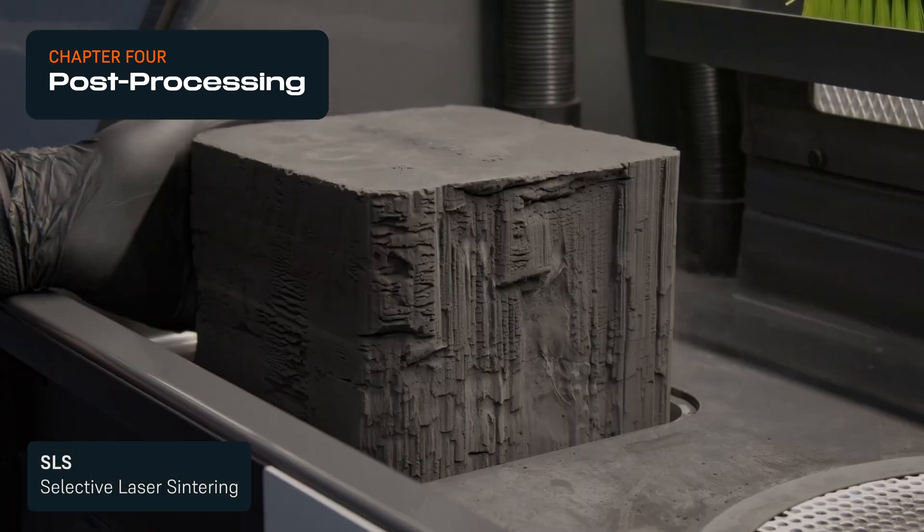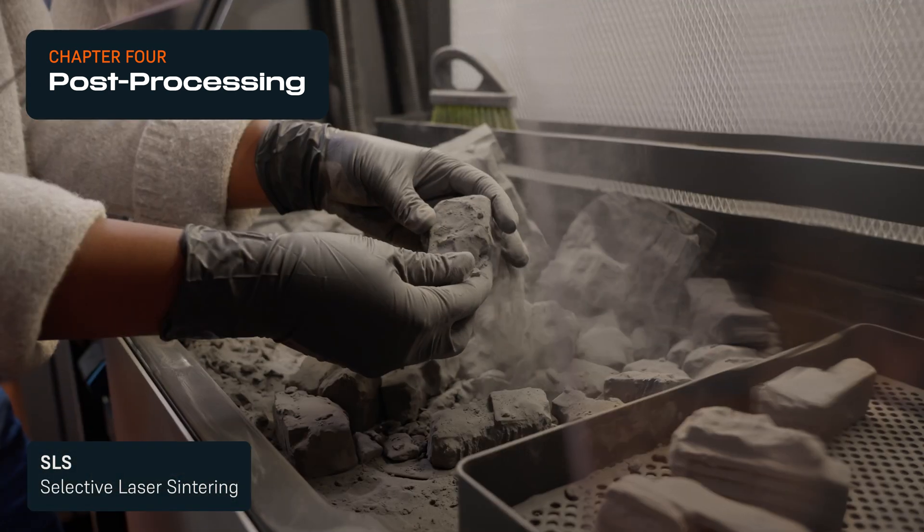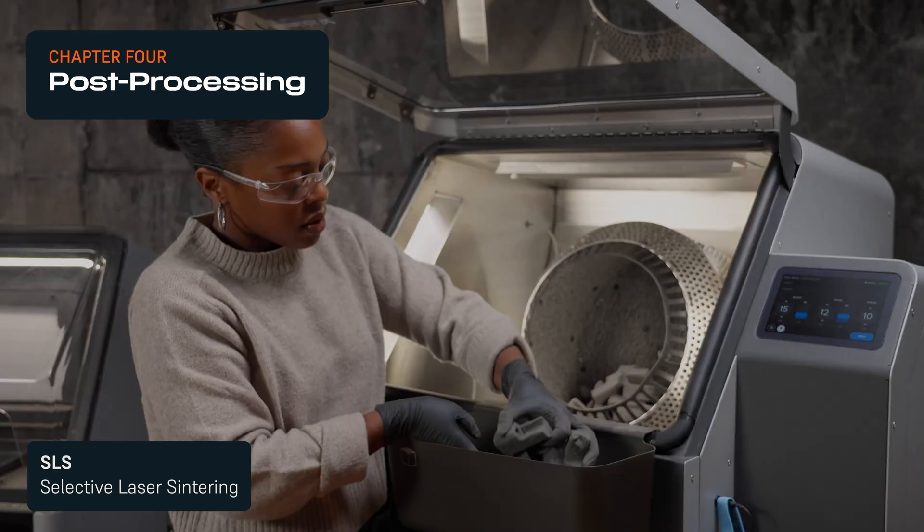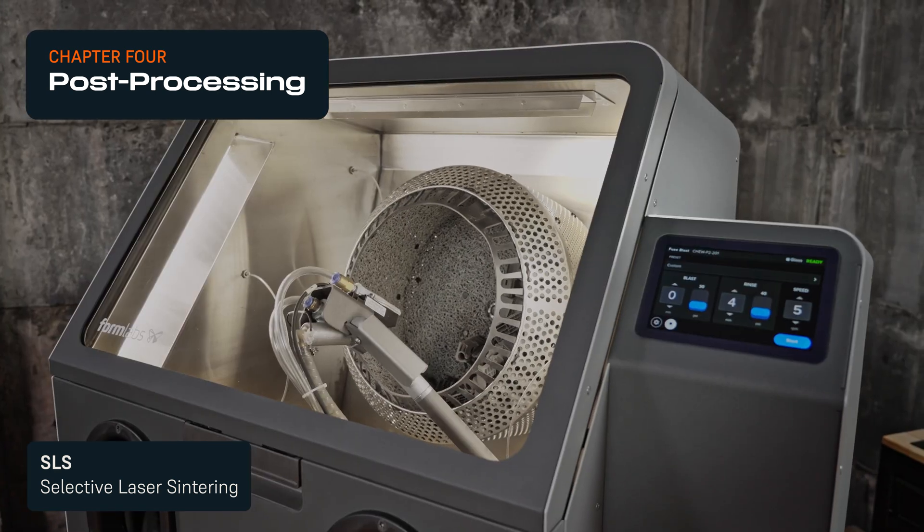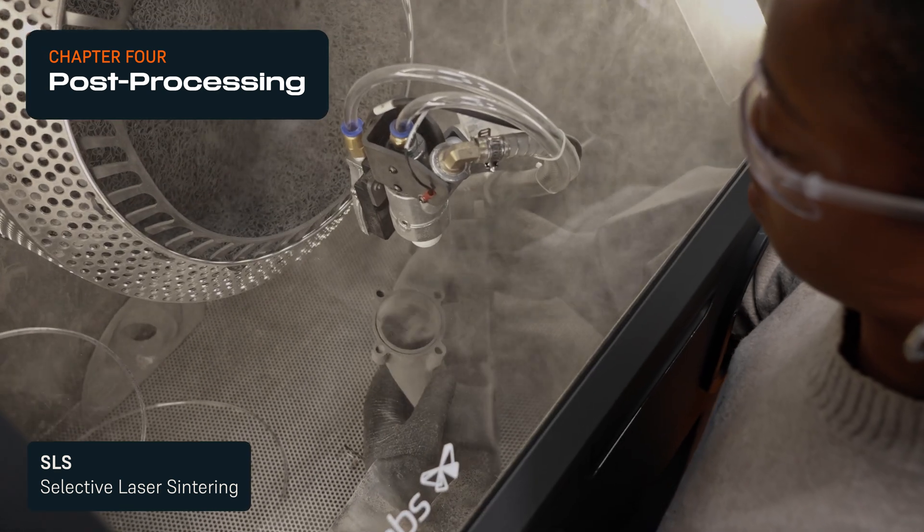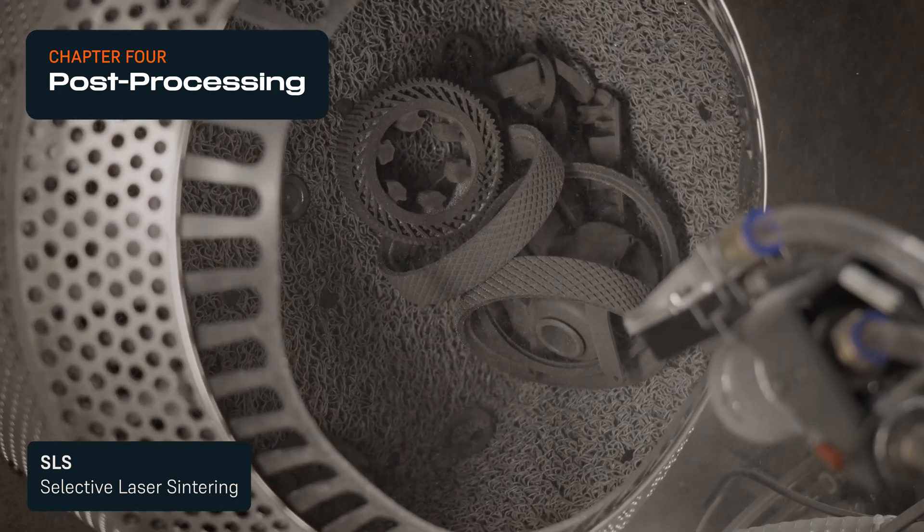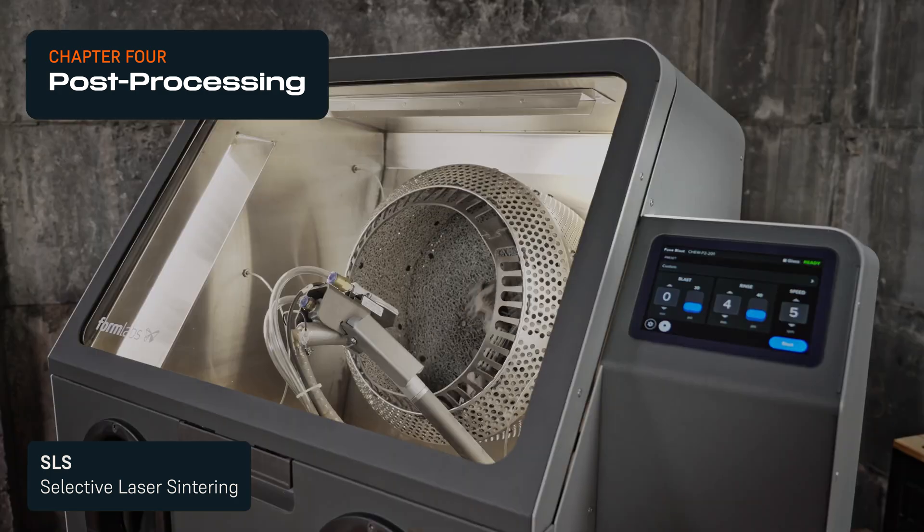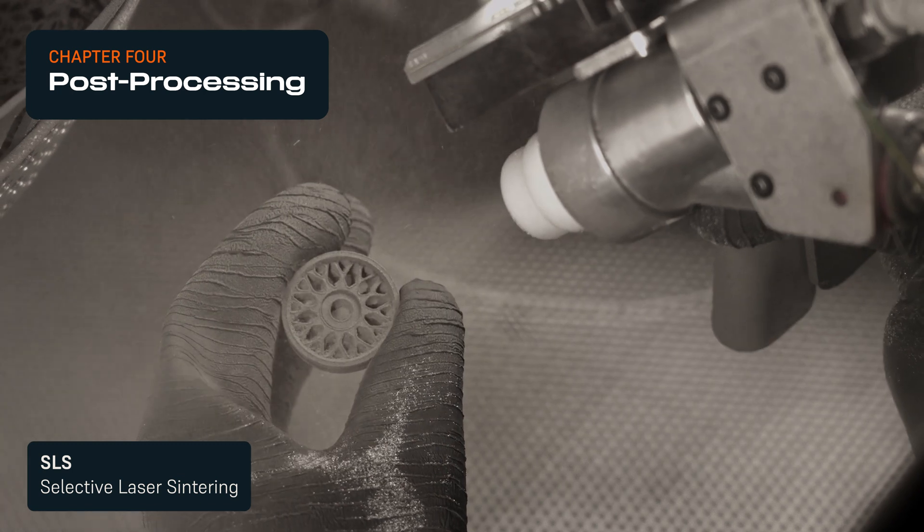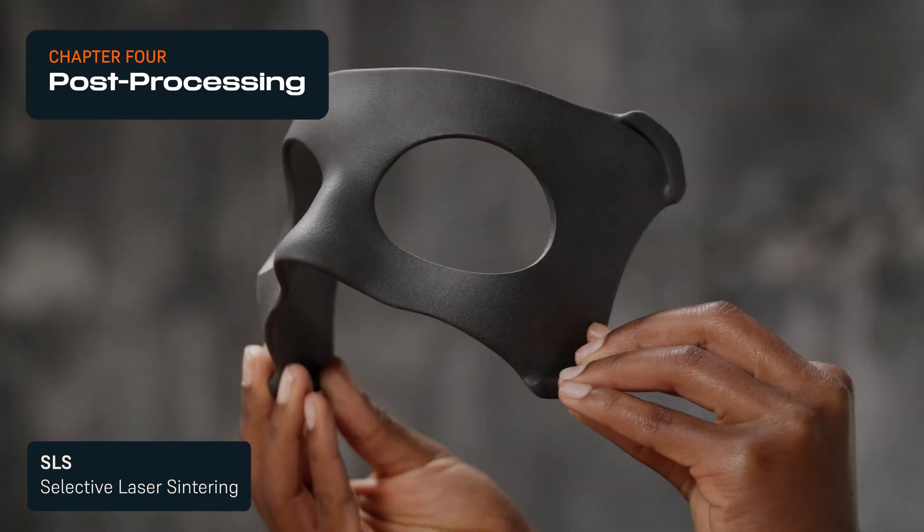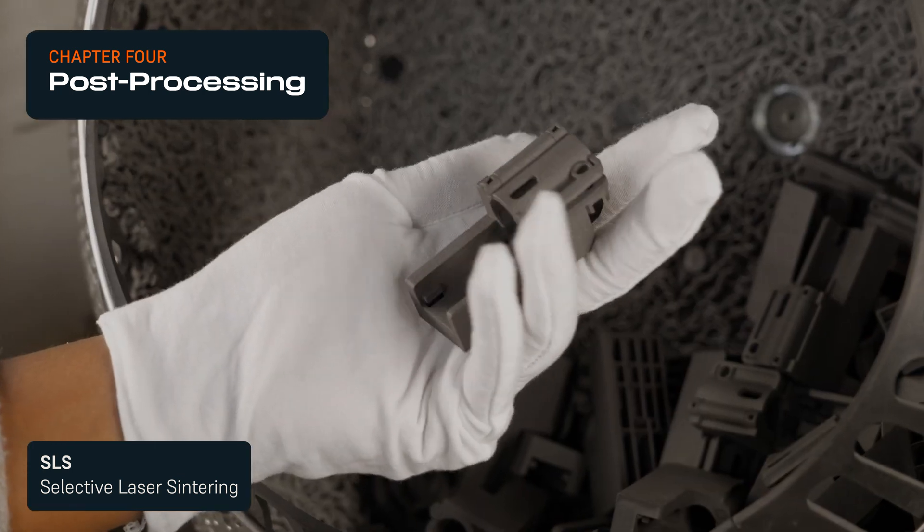The basic steps for SLS post-processing include removing excess, un-sintered powder from the parts, and media blasting to fully clean parts and smooth surfaces. As both of these steps can be mostly automated and there's no need for support removal, SLS can be the least labor-intensive and most consistent 3D printing process, especially for larger volumes of parts.